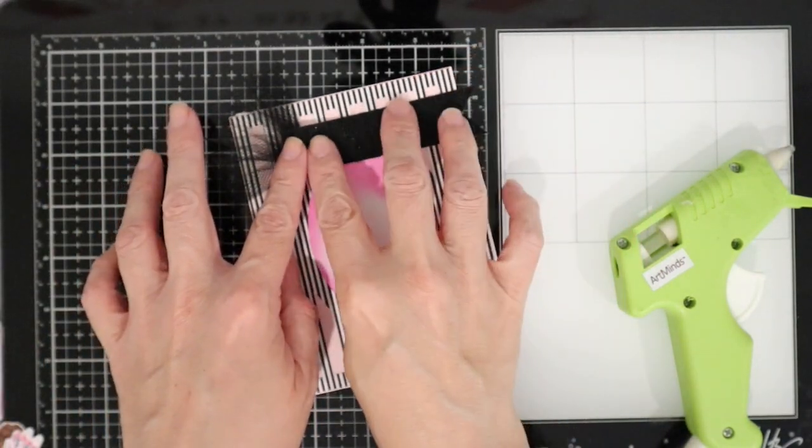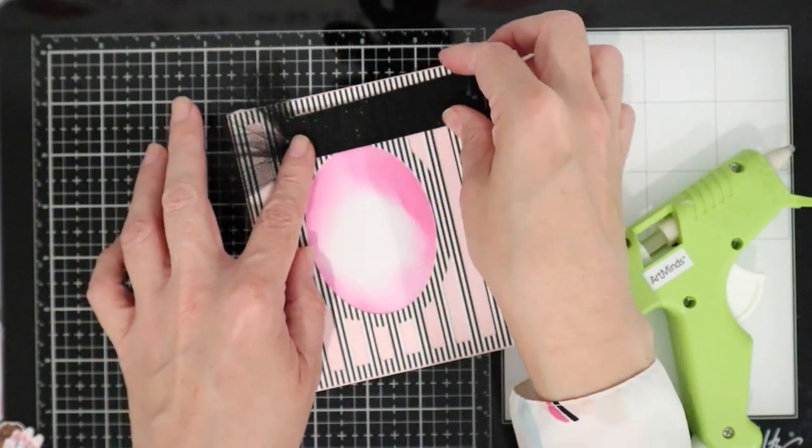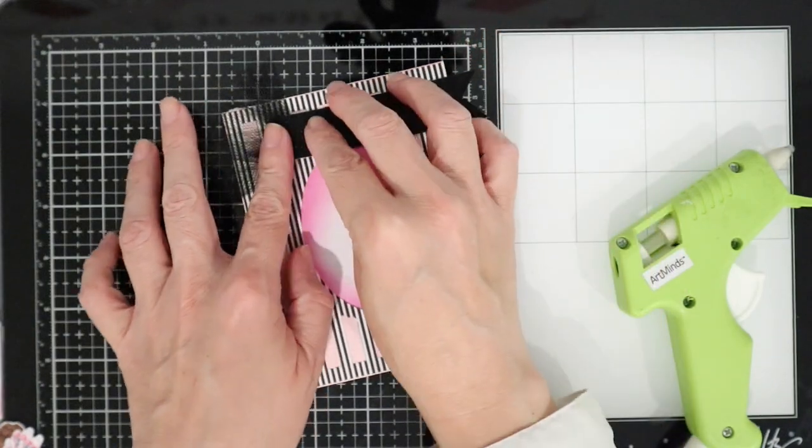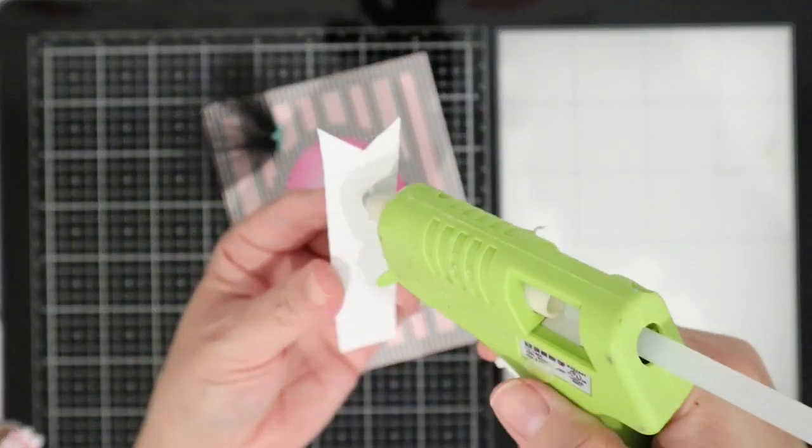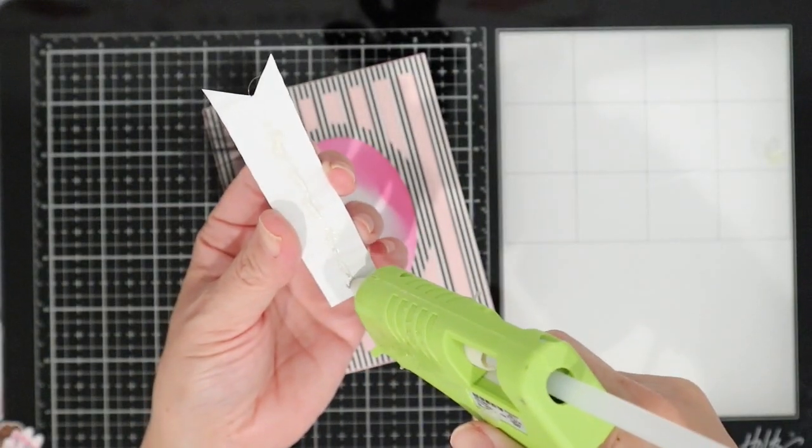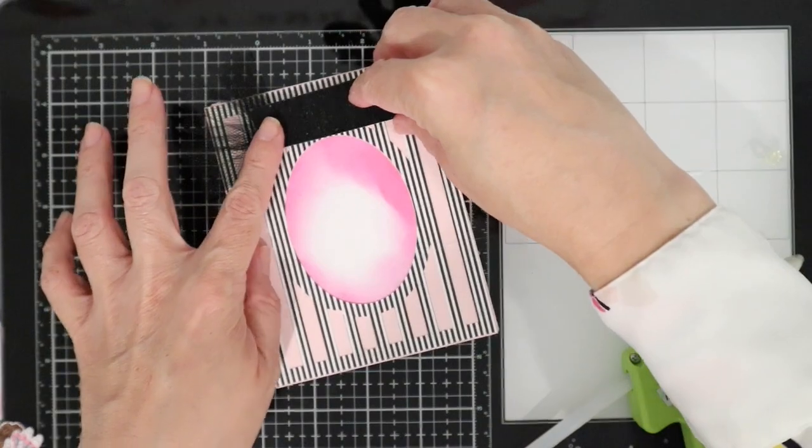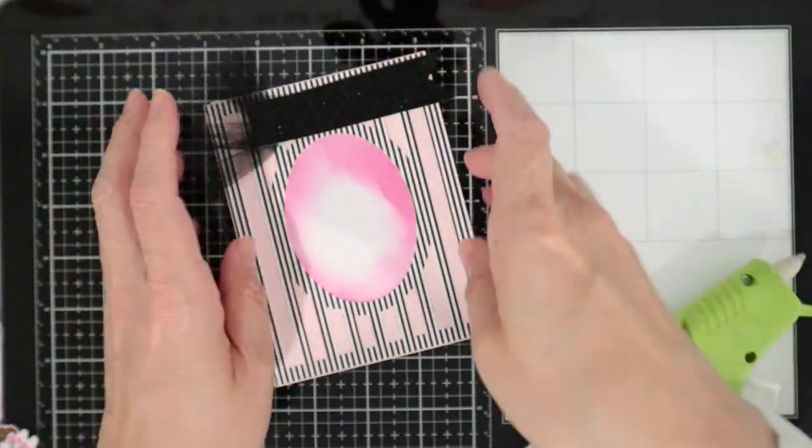As you can see I have my glue gun out, so you can obviously tell how I'm gonna adhere this. The reason I want to use my glue gun is because of these ridges. We want to make sure that it gets enough of a hold onto that card base so that it doesn't move around or fall loose.